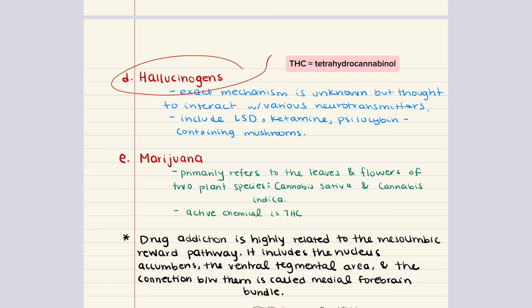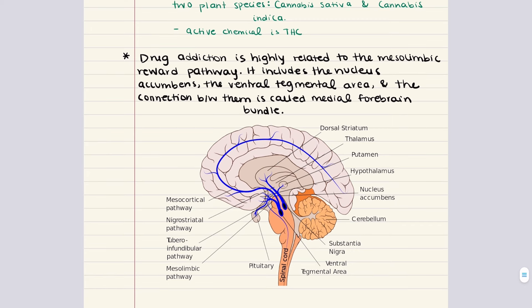Drug addiction is highly related to the mesolimbic reward pathway — one of the four dopaminergic pathways in the brain. This pathway includes the nucleus accumbens, the ventral tegmental area, and the connections between them called the medial forebrain bundle. This pathway is normally involved in motivation and emotional response, and its activation accounts for the positive reinforcement of substance use. Interestingly, this addiction pathway is activated by all substances that produce psychological dependence, as well as by gambling and falling in love.